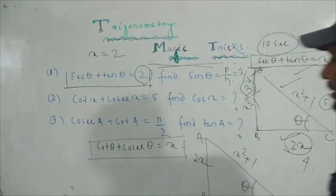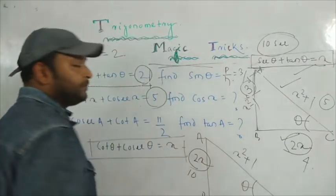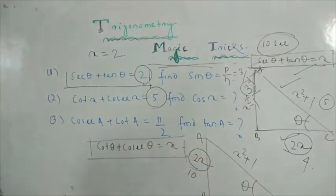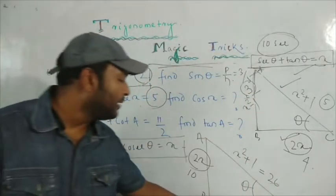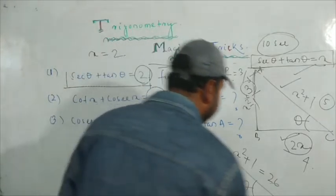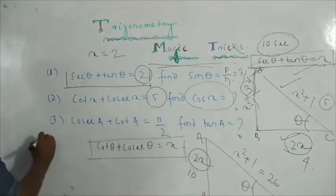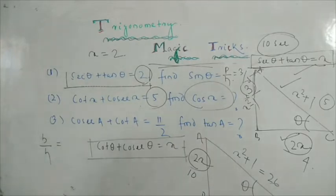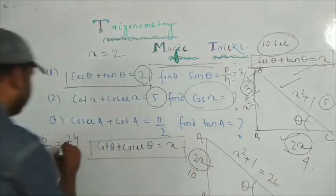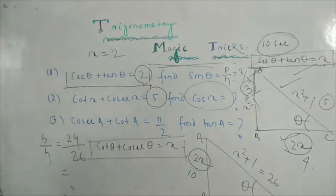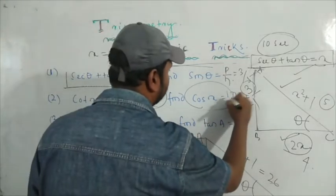Similarly for the second format: x = 5. So 2x = 10, x² + 1 = 25 + 1 = 26, and x² − 1 = 25 − 1 = 24. Then cos x = base/hypotenuse = 24/26. Divide both by 2: 12/13. So cos θ = 12/13. Yes or no? That is the answer.